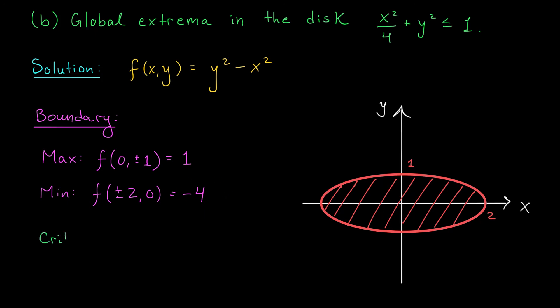So now the only part of this problem that remains is investigating the critical points. Our critical points are obtained by taking the partial derivatives of f. We have that fx is minus 2x and fy is 2y. Well, clearly these partial derivatives exist everywhere, and the only place where they're both 0 is at the origin.